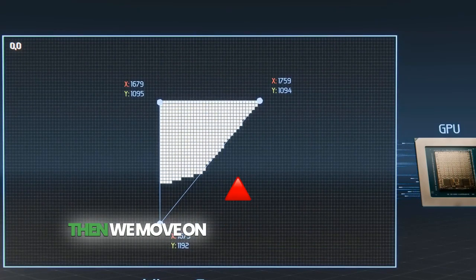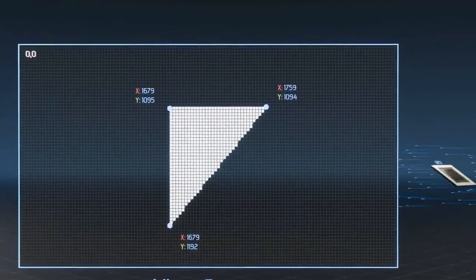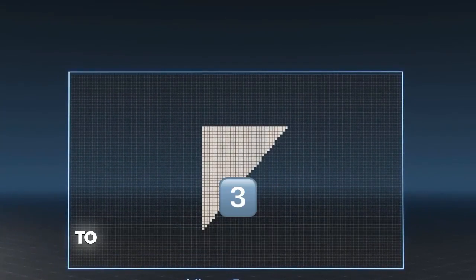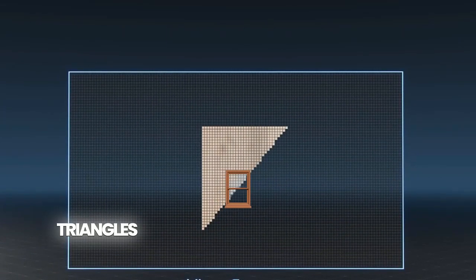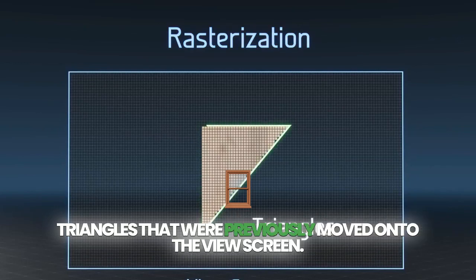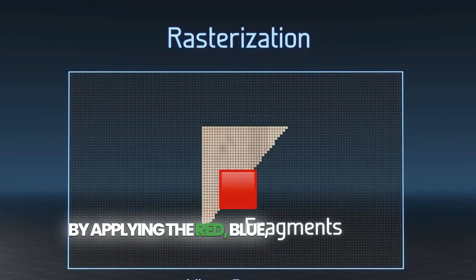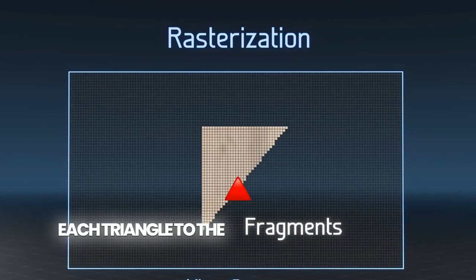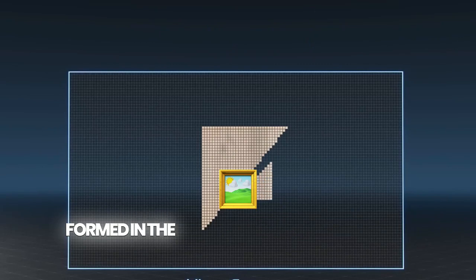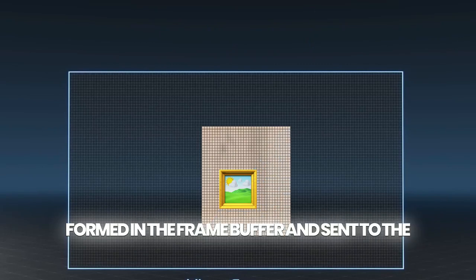Then we move on to the next triangle and shade in the pixels covered by it, continuing to do this for each of the 3.5 million triangles that were previously moved onto the view screen. By applying the red, blue and green color values of each triangle to the appropriate pixels, a 4K image is formed in the frame buffer and sent to the display.